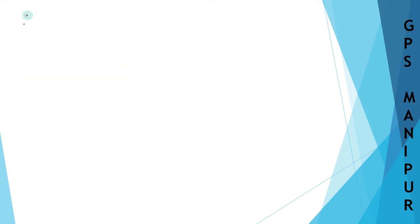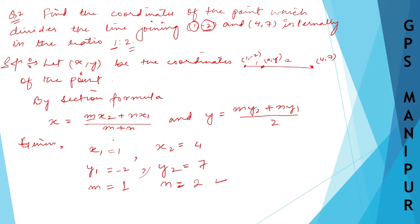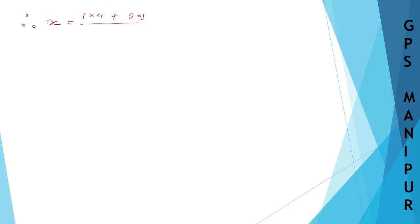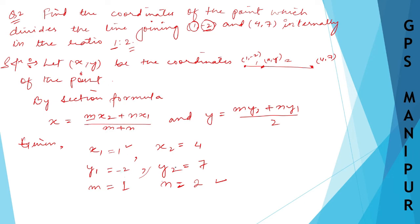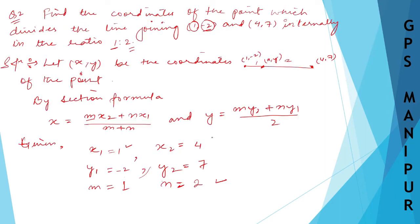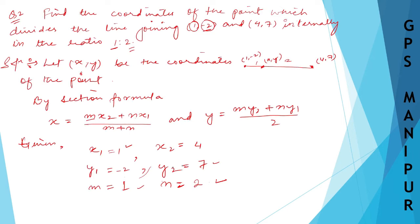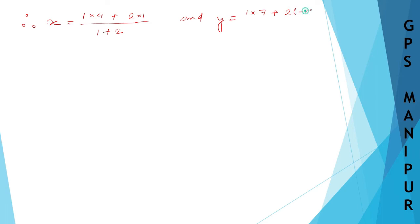Substituting into the formula: x equals m·x2 + n·x1 divided by m + n, so x = (1×4 + 2×1) divided by (1+2). For y: y equals m·y2 + n·y1 divided by m + n, so y = (1×7 + 2×(-2)) divided by (1+2).